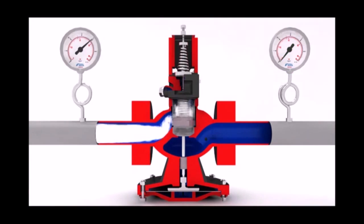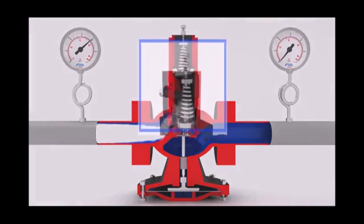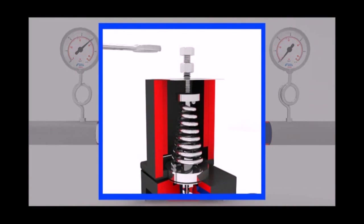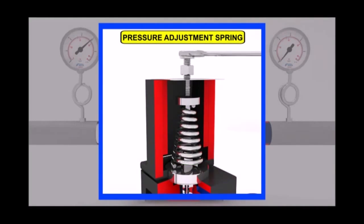Steam remains accumulated in the main valve chamber. Tightening the pressure adjustment bolt compresses the pressure adjustment spring.